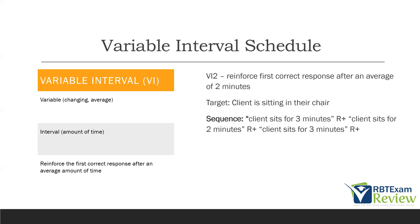Finally, variable interval schedule: variable means changing on average; interval means amount of time. So you reinforce the first correct response after an average amount of time. VI2 — variable interval 2 — means you reinforce the first correct response after an average of two minutes. So the sequence might be: client sits for three minutes, reinforce; client sits for two minutes, reinforce; client sits for three minutes, reinforce. You're looking for an average of two minutes. This produces a steady rate of responding because we don't know when reinforcement is coming.